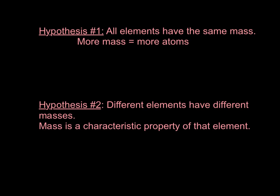These are the two hypotheses that scientists had about the mass of atoms. They really didn't know whether all elements had the same mass, like in hypothesis number 1 — if they had more mass, then they'd have to have more atoms. Or was hypothesis number 2, which said that different elements have different masses, and it's a characteristic property of that element.